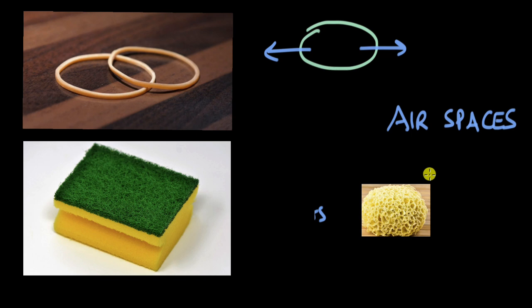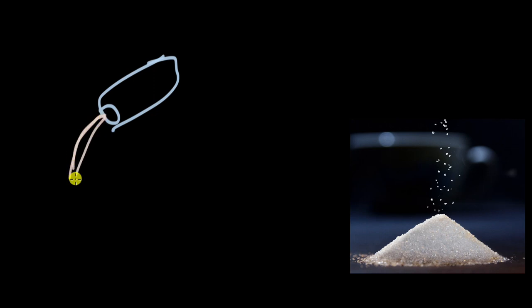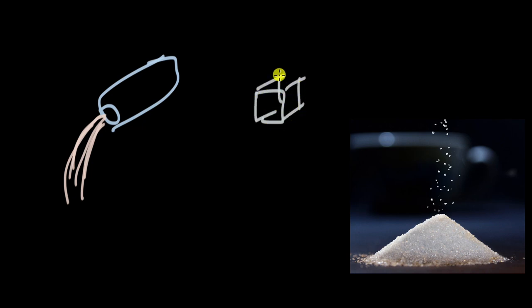Let's take one more example that challenges the definition of a solid: sugar or salt. If you pour salt from a salt shaker, you will see that salt can flow like a liquid. Can we call it a solid? It turns out we can, because if we zoom in and look at just one salt crystal or one sugar crystal, we see that it has a fixed shape and volume and cannot be compressed. It's just that you see too many crystals at once, which gives the impression they are flowing. Each individual crystal has the properties of a solid: fixed shape, fixed volume, and not compressible. So even salt or sugar is a solid.